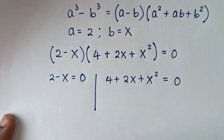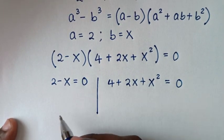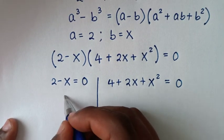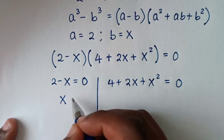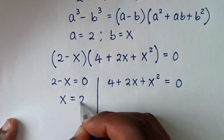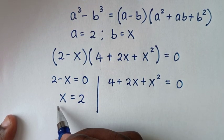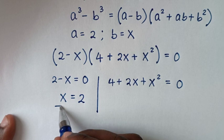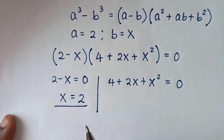Then from here, we'll take negative x to this side, so x is equal to 2. This is the first value of x, which is the real solution.